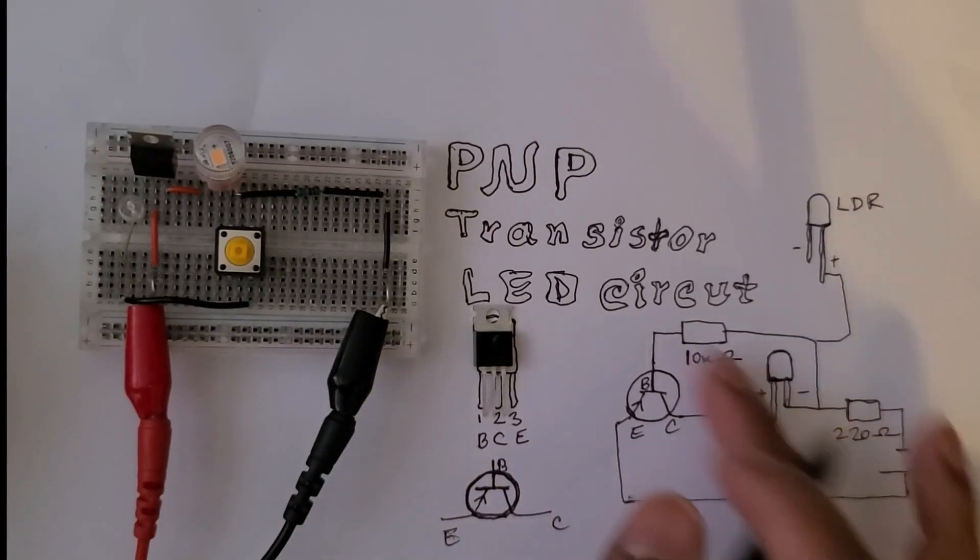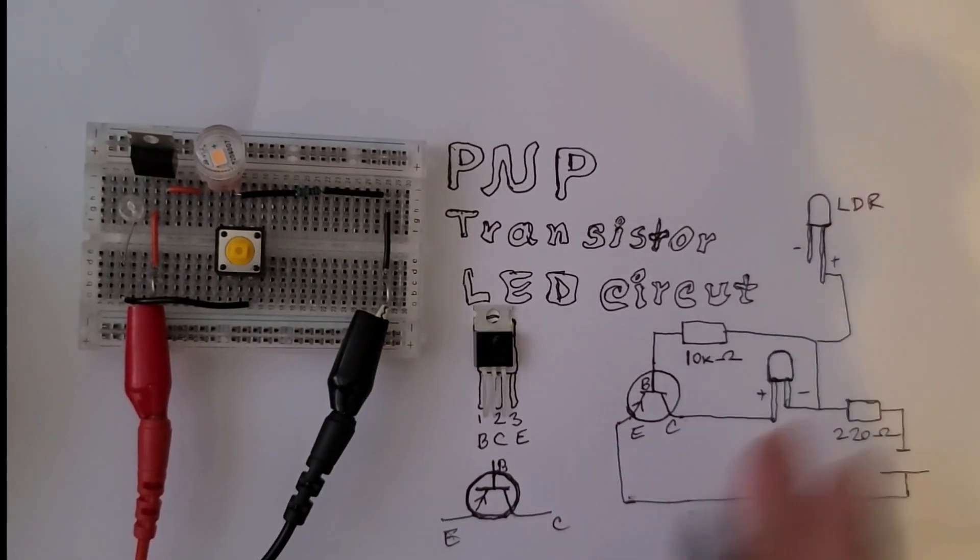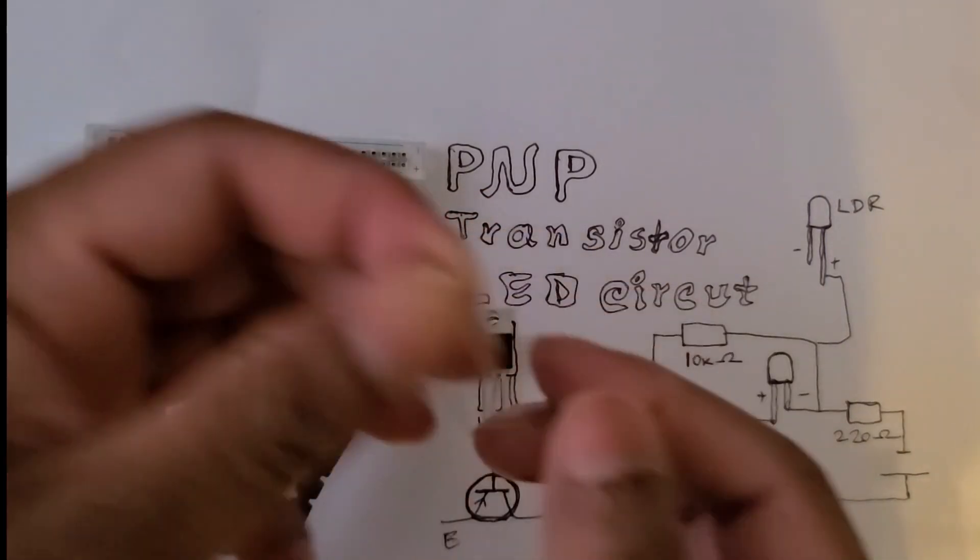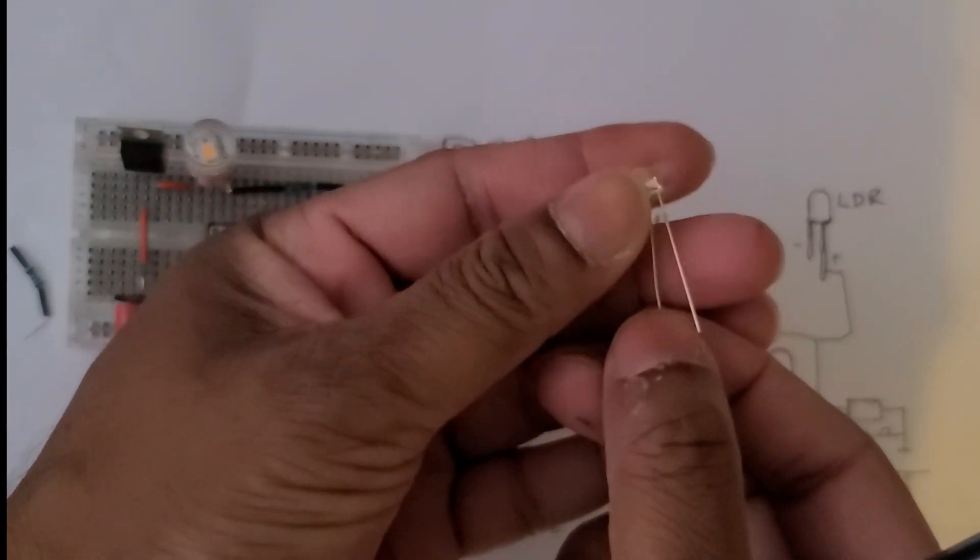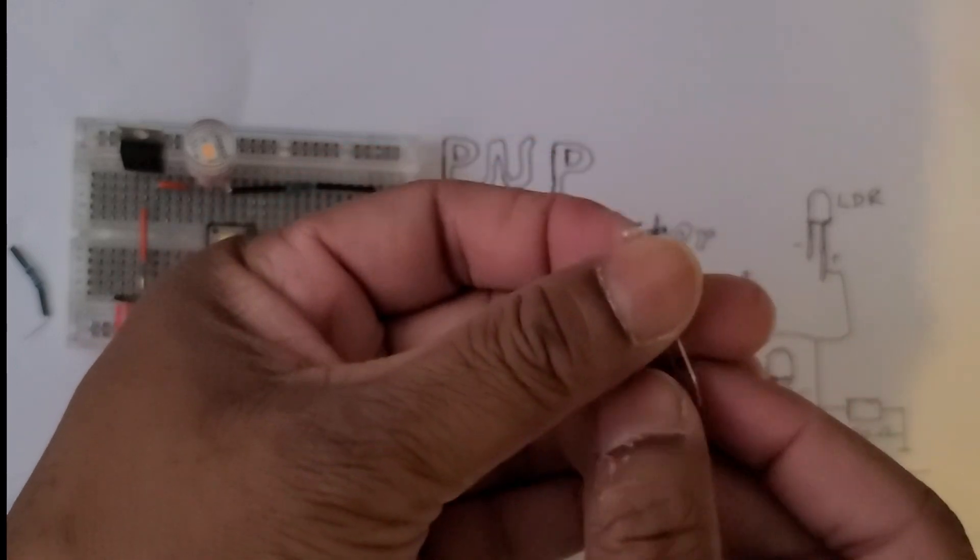Now please carefully look at the circuit diagram. I'm using an LDR, light dependent resistor. It's similar to an LED but it is sensitive to light.